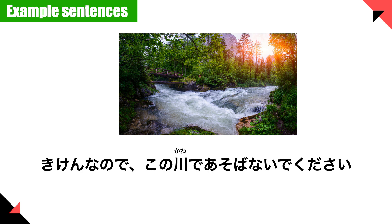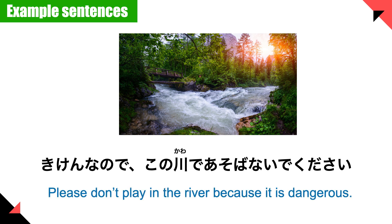Let's look at the next example sentence: 危険なのでこの川で遊ばないでください — please don't play in the river because it is dangerous. 危険 means 'dangerous,' この川 means 'this river,' and 遊ぶ means 'play.' So 危険なのでこの川で遊ばないでください — please don't play in the river because it is dangerous.